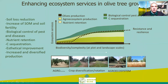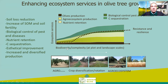We also had a very nice project showing the enhancement of ecosystem services across all growth stages. These ecosystem services included soil loss reduction, increase of soil organic matter and soil fertility, biological control of pests and diseases, nutrient retention, carbon sequestration, aesthetic improvement of the landscape, and increased and diversified production. Schematically speaking, the increase in all ecosystem services goes along with the increase of biodiversity and complexity at both the plot and landscape scale.